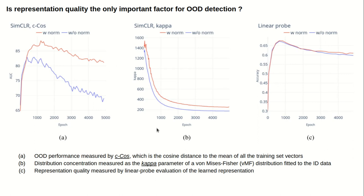The blue curve here shows the training and evaluation logs of a SimCLR model. We can see that although its linear probe accuracy is nearly constant throughout very long training, the picture is very different for its OOD performance, which deteriorates significantly with long training. An analysis of the concentration of the distribution also shows that it deteriorates significantly during training at the same time.